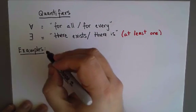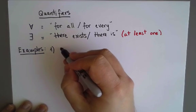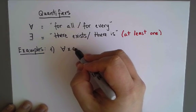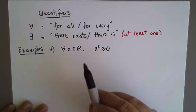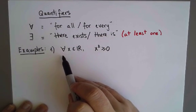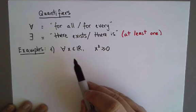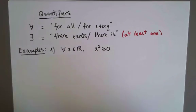I'll start with 'for all.' Let's see, this reads: For every real number x, x² is greater than or equal to zero. That's certainly true.